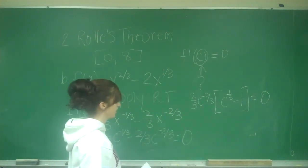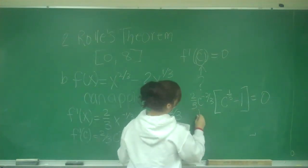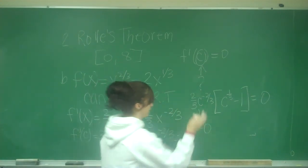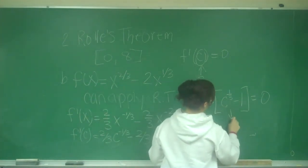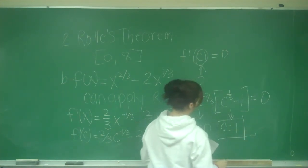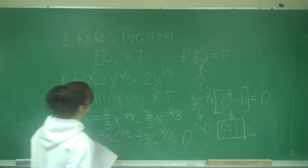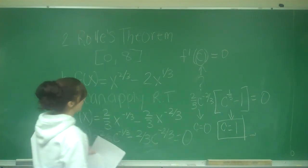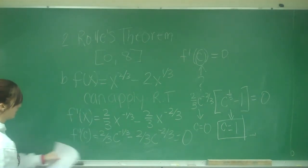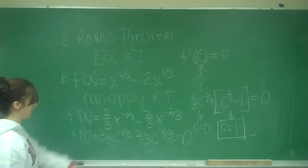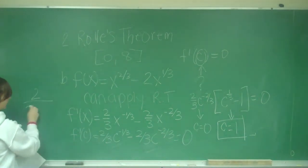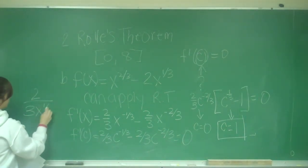So now I can set both parts equal to 0. So when I set this part equal to 0, I get c is equal to 0. And when I set this part equal to 0, I get c equals 1. But this is the value that I want to choose, not the c equals 0 value. Because 1 is in my interval from 0 to 8. And also because 0 is not defined here because I'm dividing by, so it would be 2 over 3x to the 1 third. So I can't divide by 0.